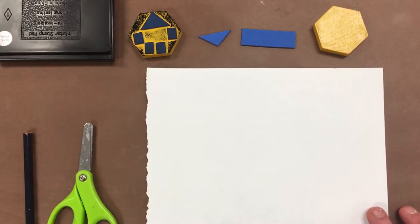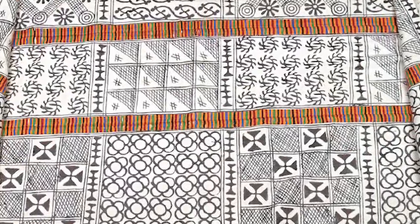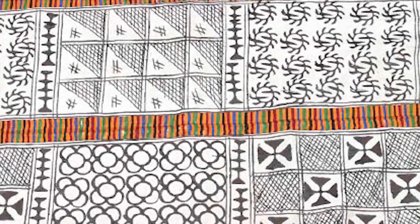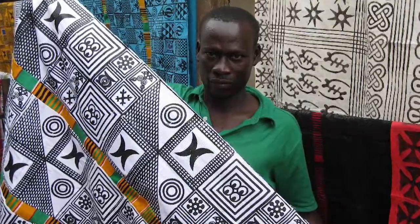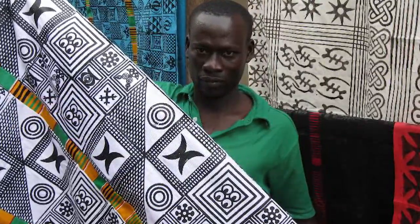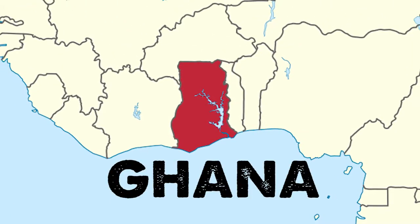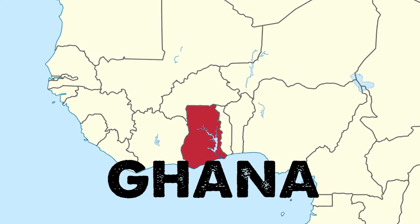A Dinkra cloth is hand printed and hand embroidered cloth, which was most often used for mourning ceremonies when someone died. But now it's worn for a variety of social occasions. It was most commonly found in Ghana, but it's found in a lot of parts of West Africa too.